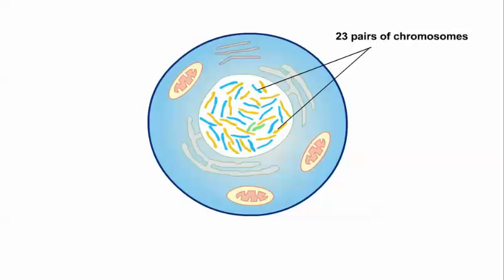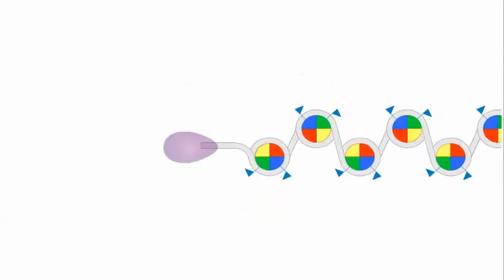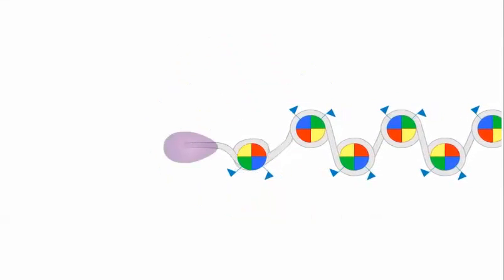The first step in compacting DNA into chromosomes is the assembly of nucleosomes. Each time the cell divides, the DNA must be duplicated.